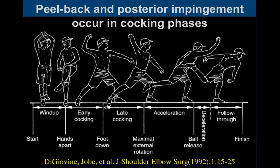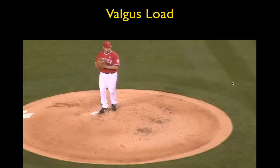Looking at the different stages from Jobe's 1992 article: you start with the wind-up, then hand separation, then early cocking, then the late cocking phase - this is where you get impingement of the shoulder. This is also the phase where we get a lot of pathology in the elbow in throwers. Then there's the acceleration phase, the release, and the follow-through.